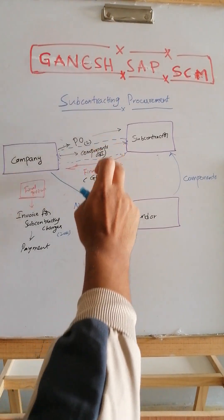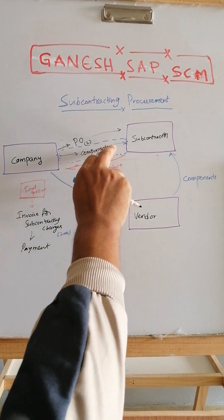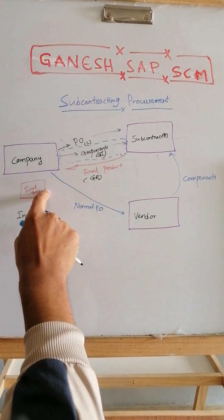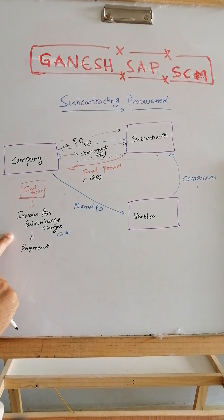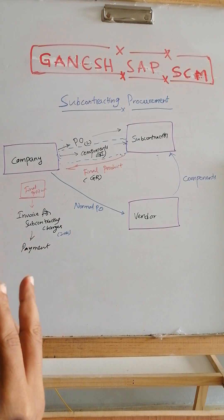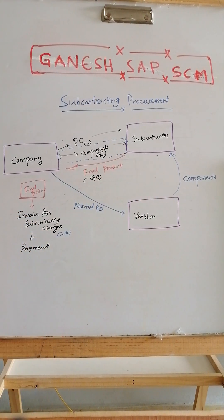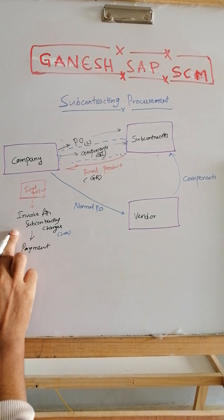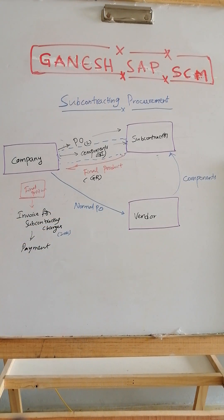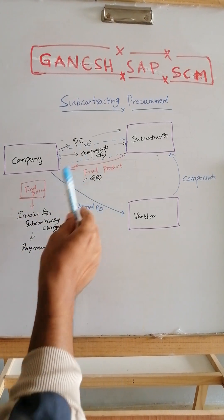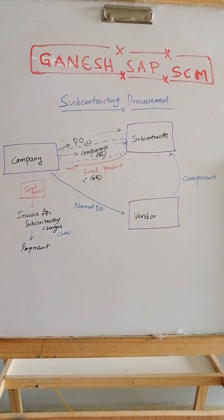For accounting entries, there are three entries: one for the components goods issue, one for receiving the final product, and one for the subcontracting charges invoice. Only the subcontracting charges will have a GR/IR entry because the invoice is only for subcontracting. There is no financial invoice for the final product, and for the components only the stock value goes down.